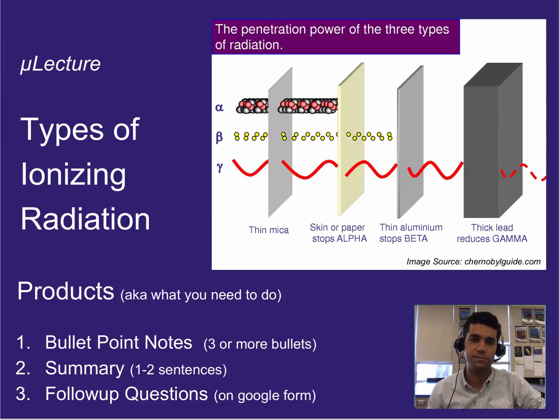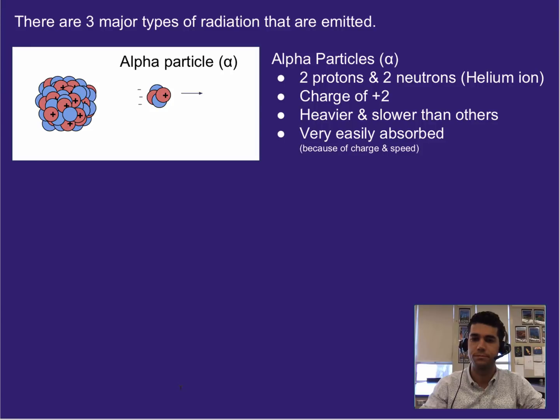Hi, this America Lecture is on types of ionizing radiation. As always you need three or more bullet points worth of notes, one to two sentence summary, and do your follow-up questions on Google Forms.